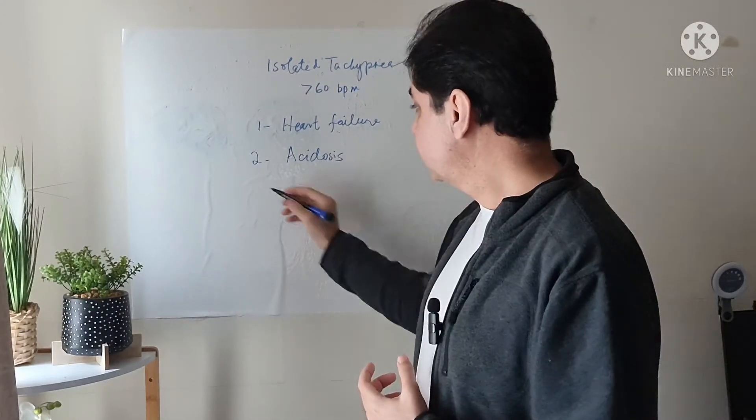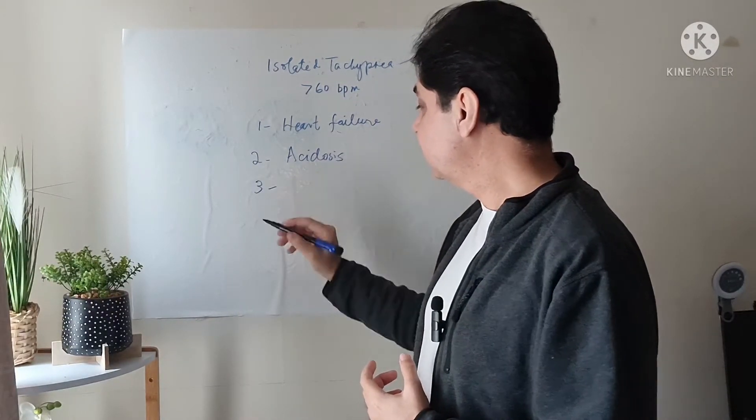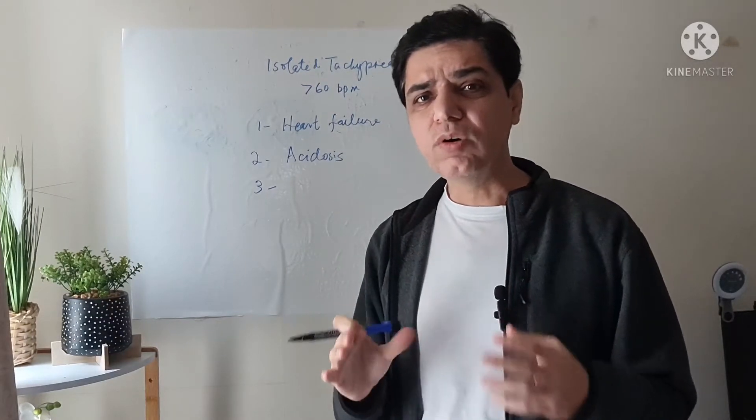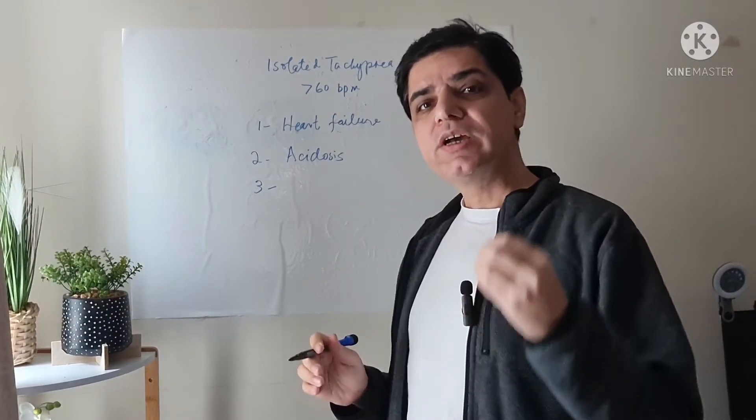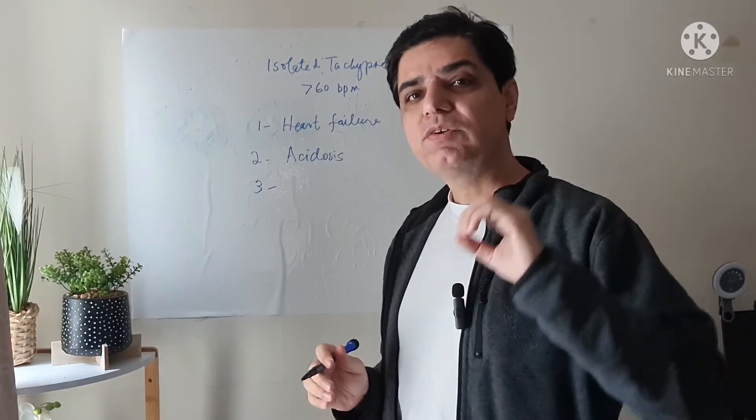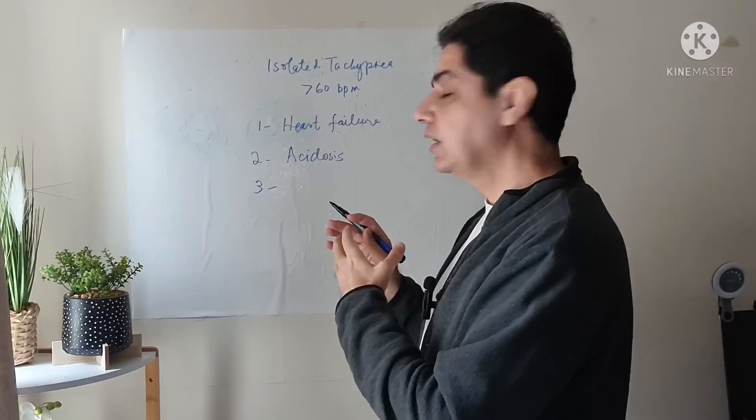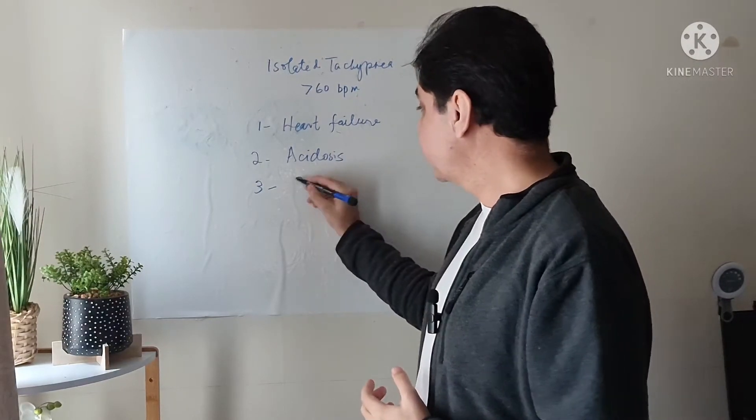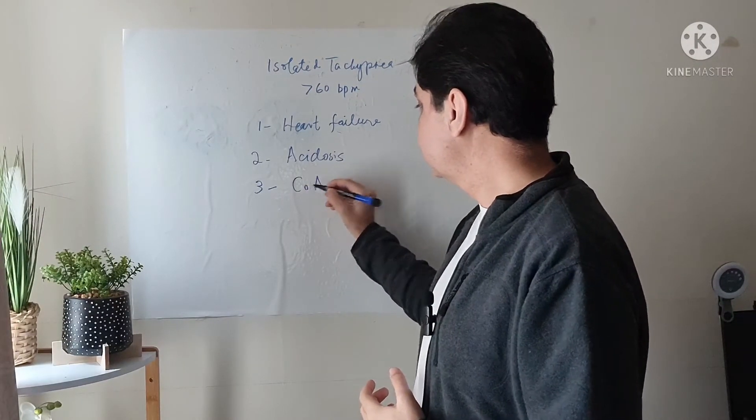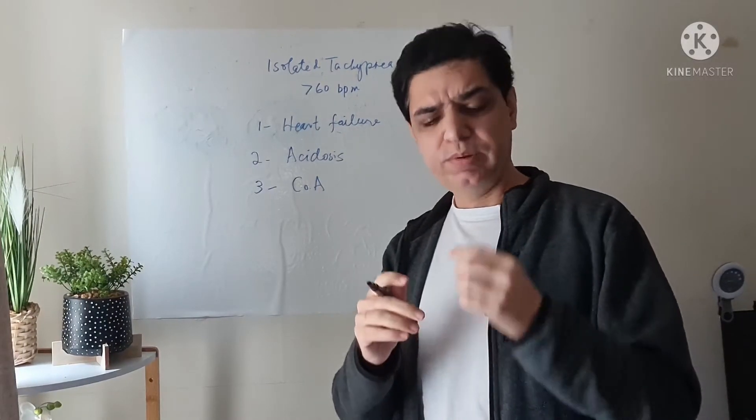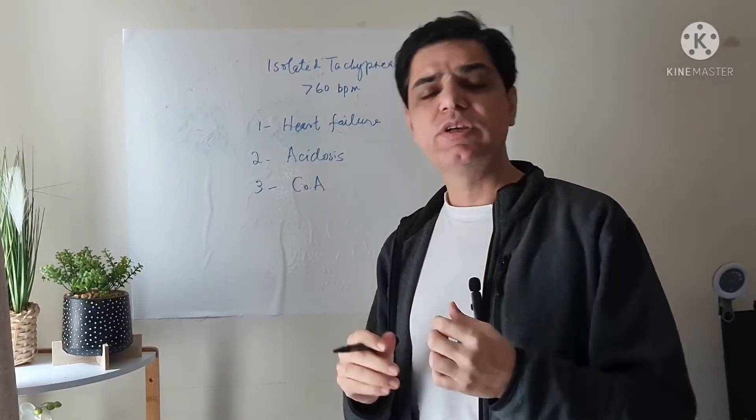The third important cause of isolated tachypnea where the chest is normal might be a missed congenital heart disease. One of the common missed congenital heart diseases that can give you isolated tachypnea is coarctation of aorta. Coarctation of aorta is a condition in which part of the aorta is stenosed.